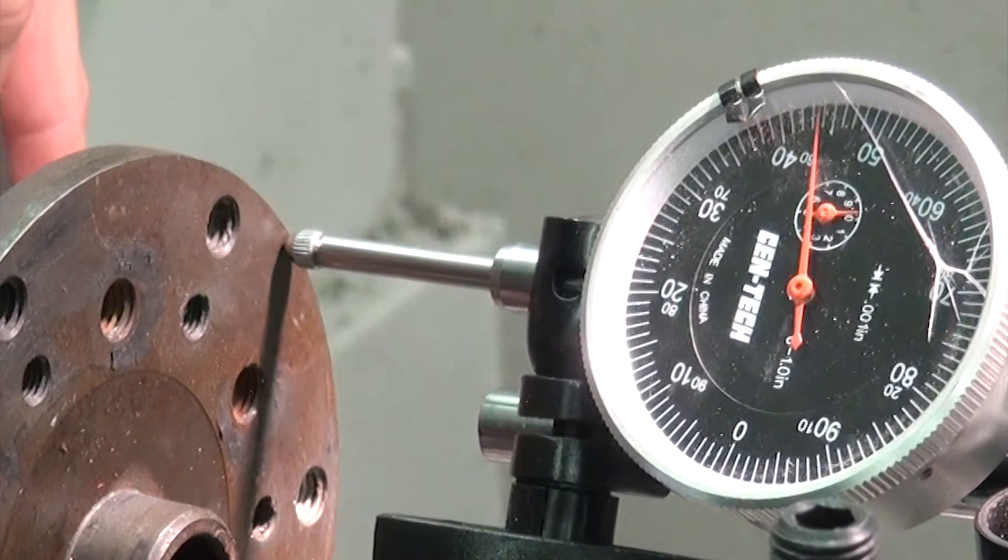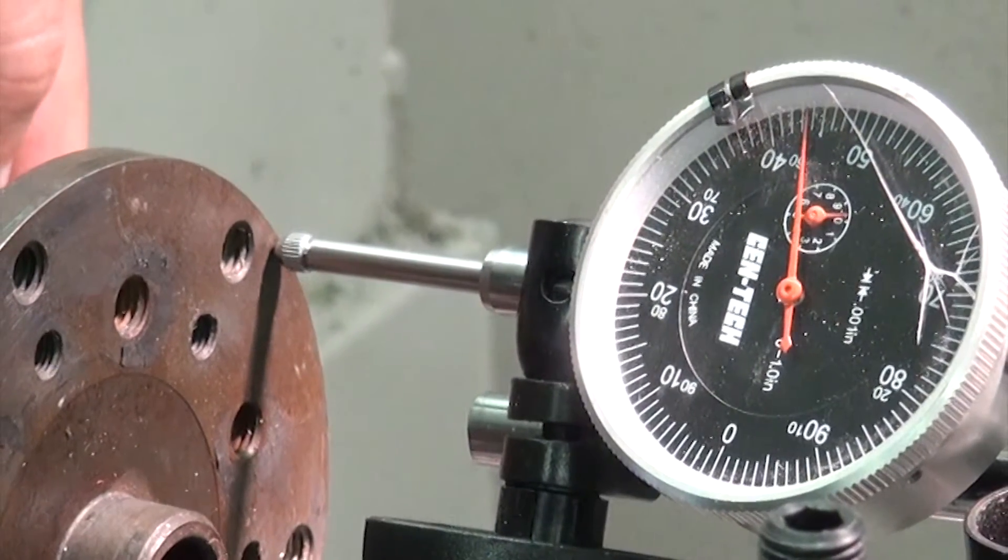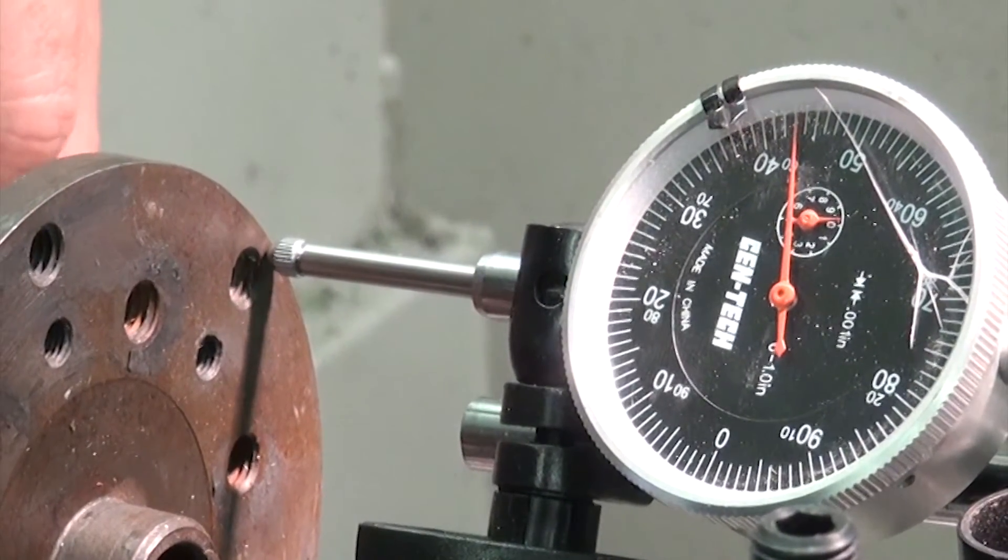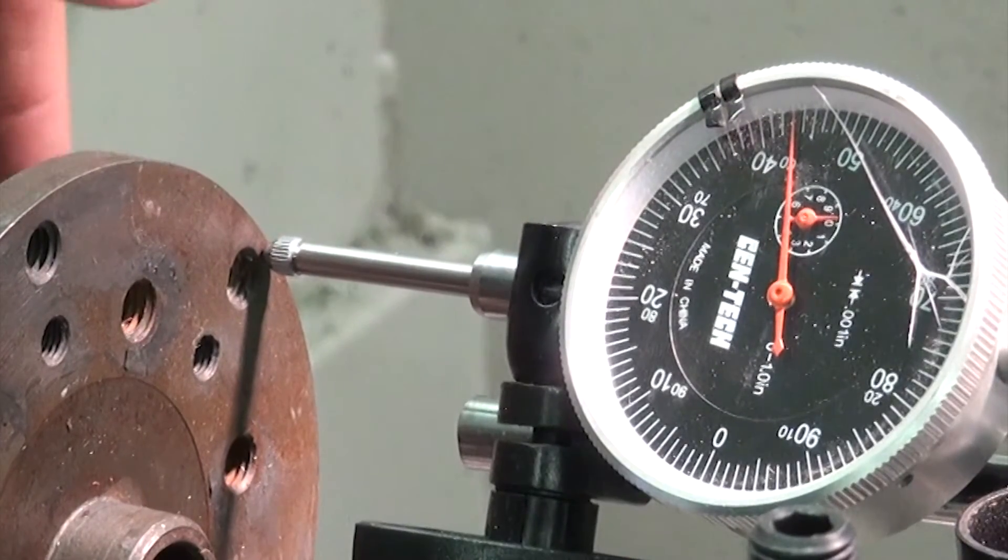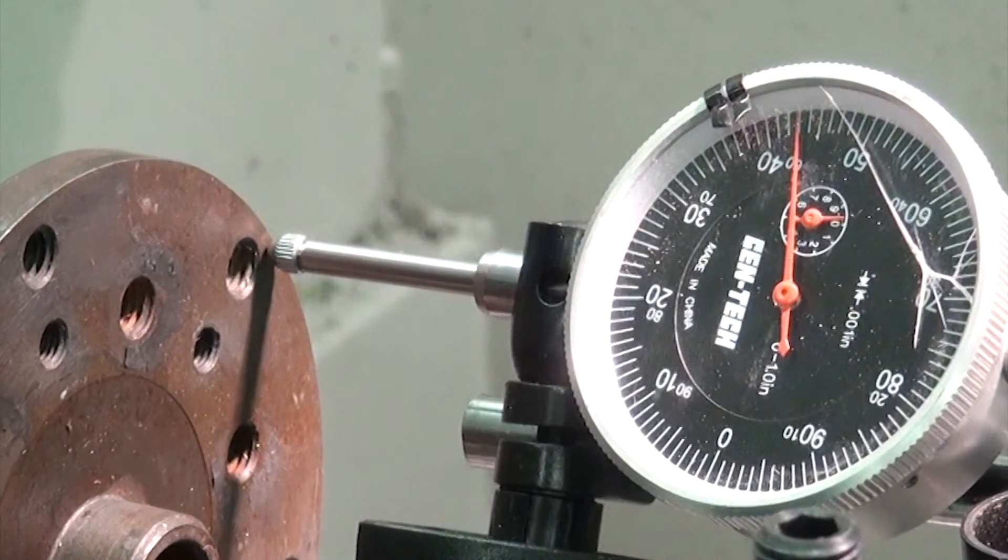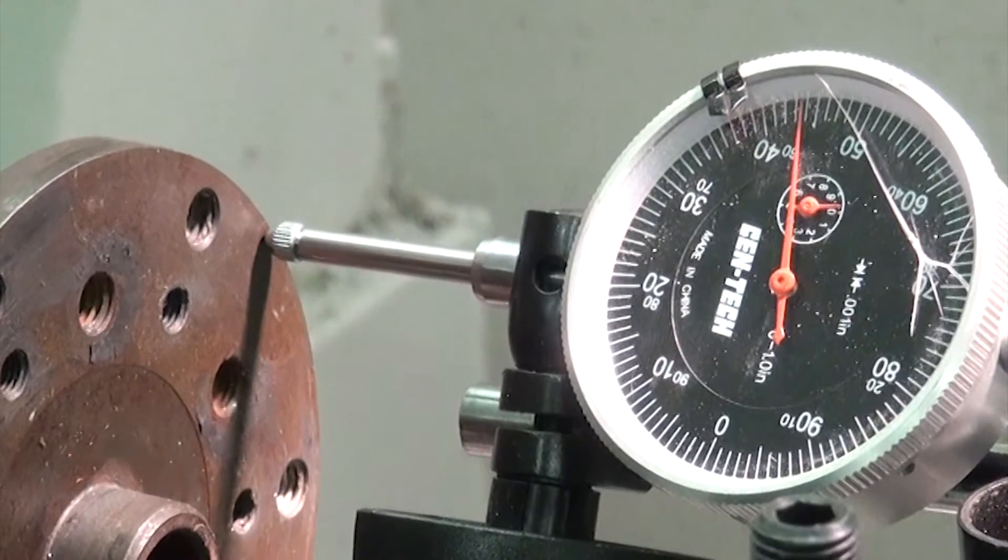Any time that we have a prop strike, of course, we're going to be doing a prop flange run-out. And this is a good example of one that is totally hosed and it's not going to be able to be used again.